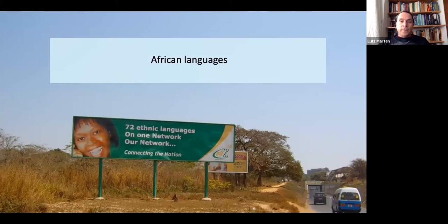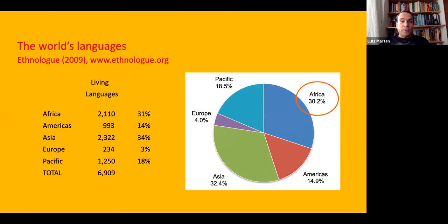A little bit of background on African languages. This is a picture from Zambia of a mobile phone company advertisement saying "72 languages, 70 ethnic languages, on one network." There is a pride in linguistic diversity which is more recent - we might not have gotten that just after independence. That's something really exciting about studying African languages. There are about 7000 languages in the world, and of those about 2000 are spoken in Africa - so Africa is very language-rich, about a third of the world's languages.